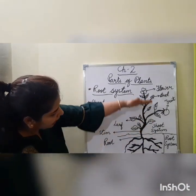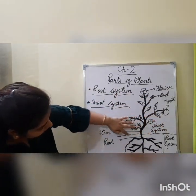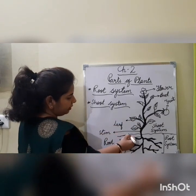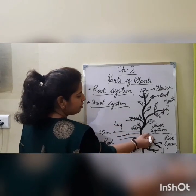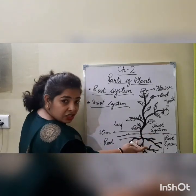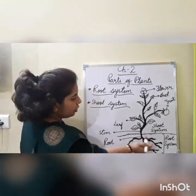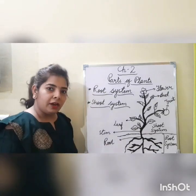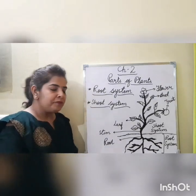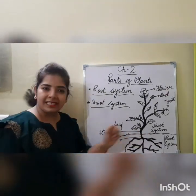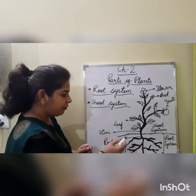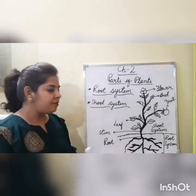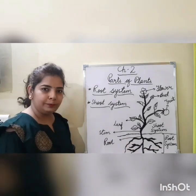The part above the soil — you can see this is the soil. The part below the soil is the root system and above the soil is the shoot system. Now in the root system, we have root.